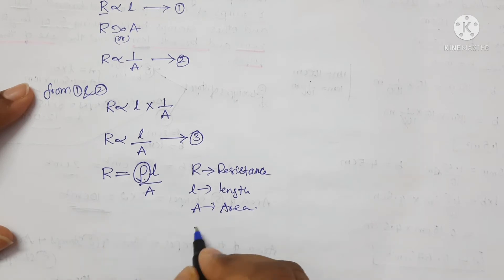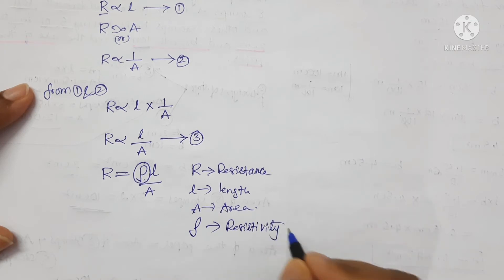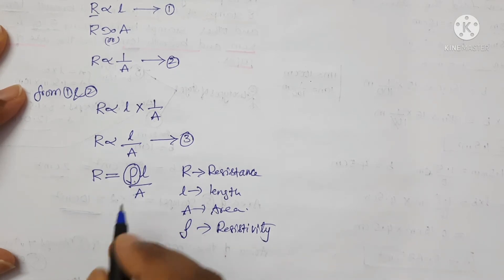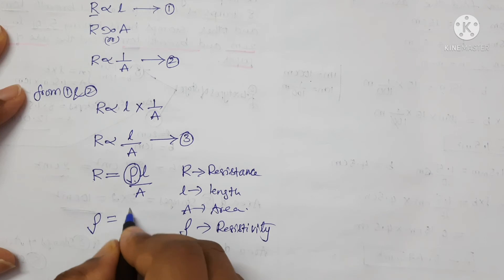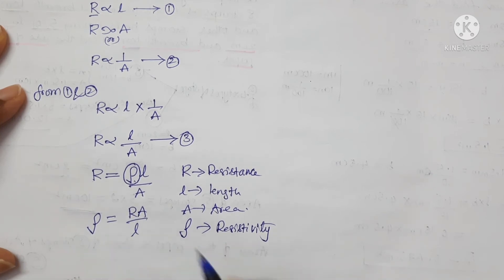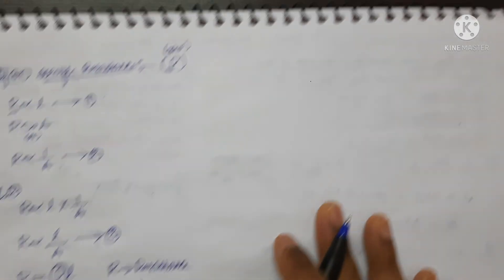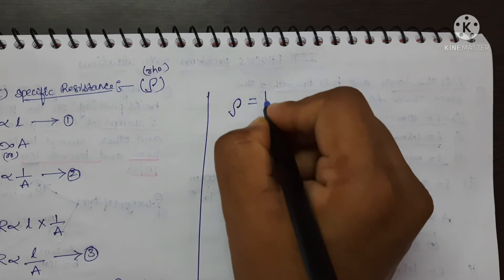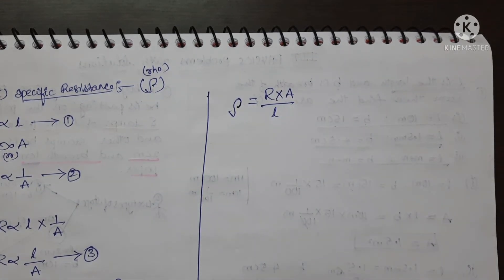And rho is the resistivity, or specific resistance. Now we are going to find the dimensions for this. Keeping rho on one side and bringing R and A to the other side gives rho equals R into A by L. This is the formula for resistivity.